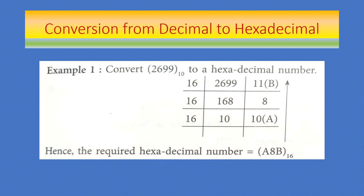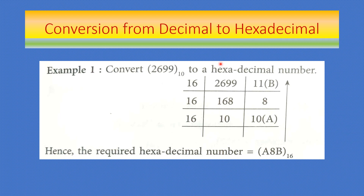Now let's learn conversion from decimal to hexadecimal. Just as in decimal to binary we divided by 2 (the base of binary), in decimal to hexadecimal we will divide by 16 because the base of hexadecimal is 16. So to convert 2699 to hexadecimal, we keep dividing by 16 until we get 0.